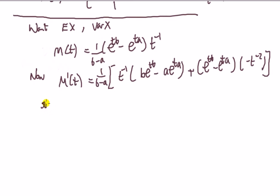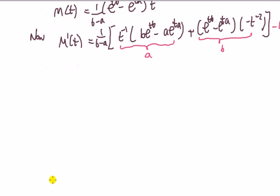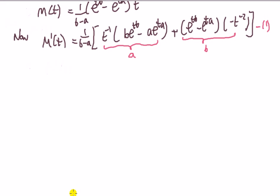Now I'm ready to put in t=0. But I have a problem: I've got t^(-1), so calculating at 0 gives 0 over 0 — that's an indeterminate form again. So let's break this down. Let's call this expression equation 1, call this quantity A, and call this whole thing B. We've got two indeterminate forms and we're going to see where they go in the limit as t goes to 0.